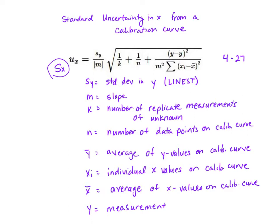If you make a calibration curve and then you want to find the concentration of three samples that are replicate measurements, so you do trial one, trial two, trial three of the same sample, then k in that case would be three. This is the number of replicate measurements of the unknown.